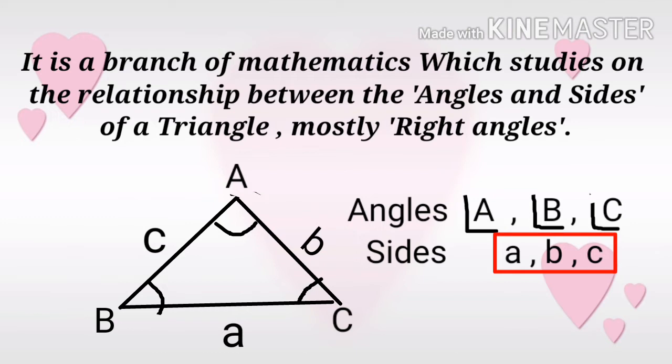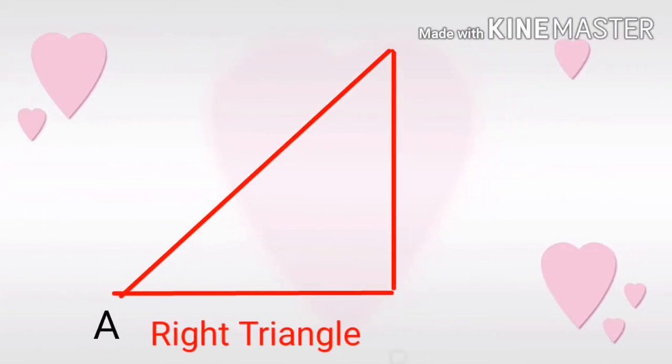Many students feel the trigonometry chapter is difficult in math. But in fact, it is very easy because trigonometry deals with only one type of triangle: right-angled triangles. In trigonometry, we use mostly right-angled triangles.